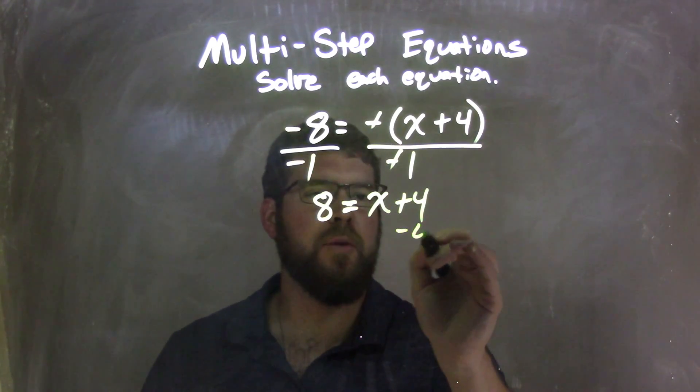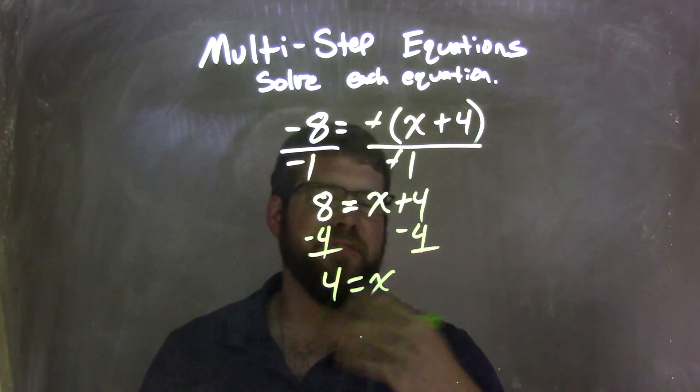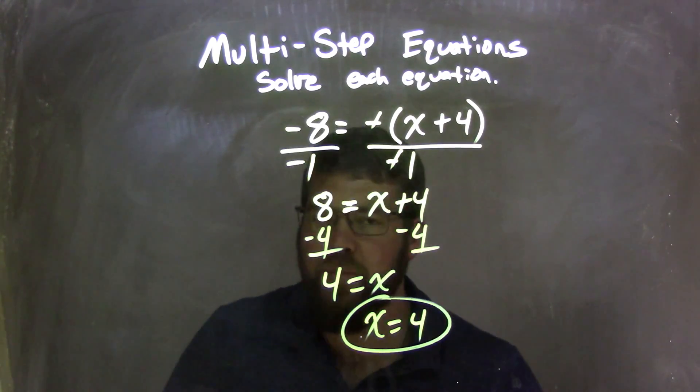Now I just have to subtract 4 from both sides, get x by itself, and we have 4 equals x. Let's rewrite it, x first, so x equals 4, and that is my final answer.